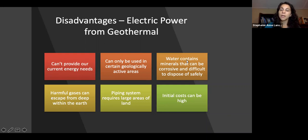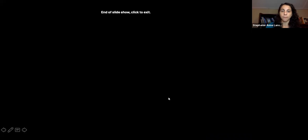Disadvantages: It's only used in certain locations and is currently a very low percentage of our energy needs. Some water may have corrosive minerals that need to be disposed of. The condensate has harmful gases we need to capture and not emit. These piping systems require large areas of land for installation, so initial costs can be high. Thank you for learning about geothermal systems.